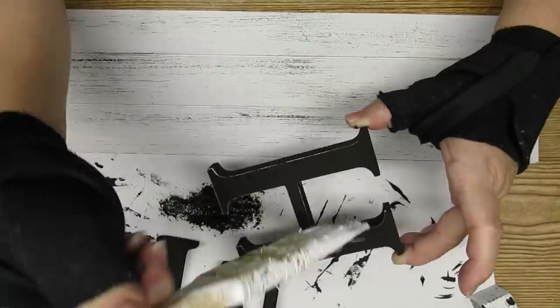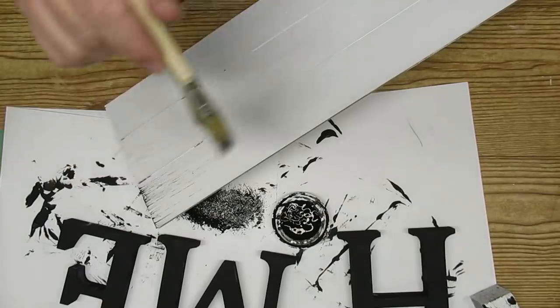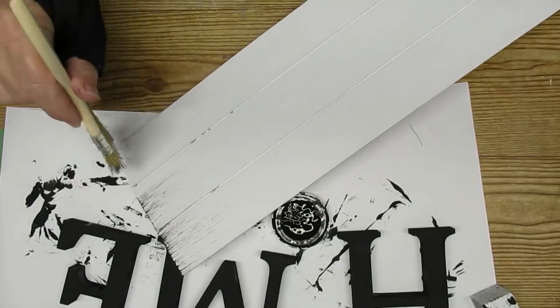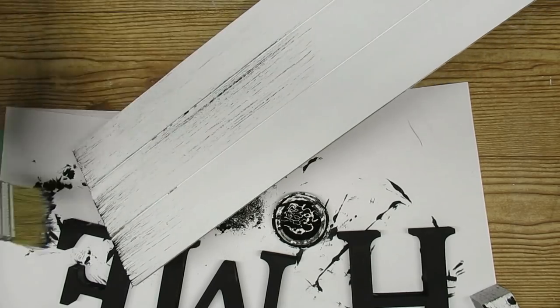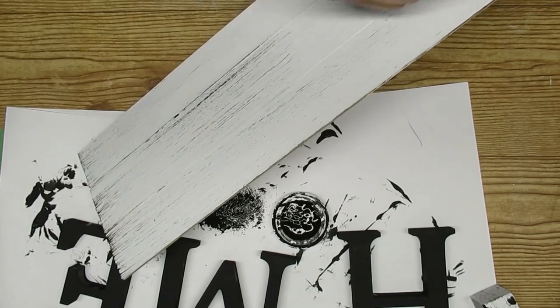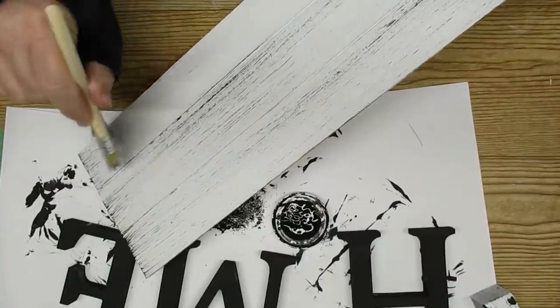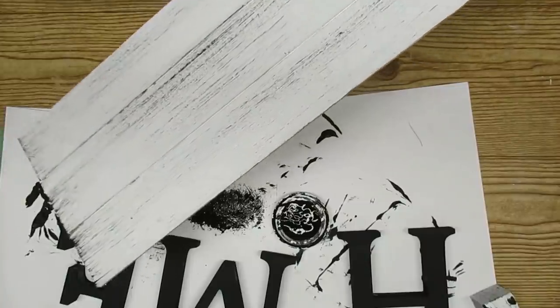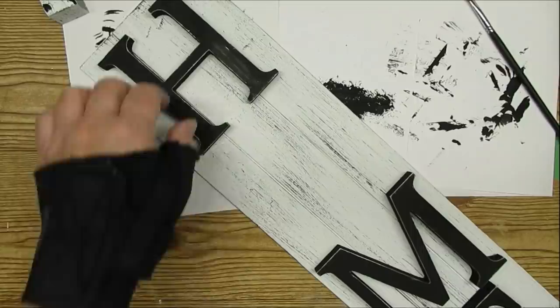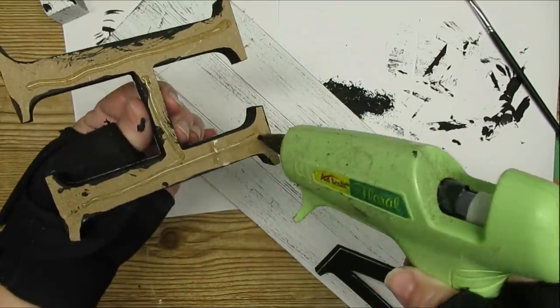Using a really old chip brush, I'm just going to dip it in some black chalk paint and drag it up and down the sign to give this some really good distressing. I really love the white and black together. Next I'll just hot glue the letters right onto the sign.